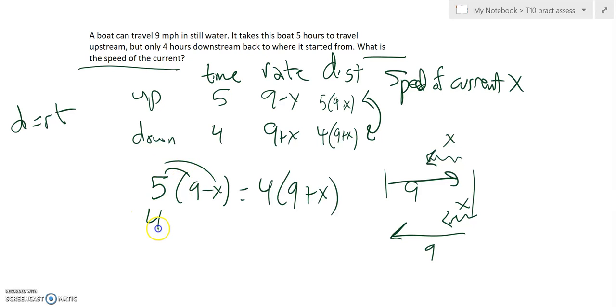You can just solve that, distribute that in. 45 minus 5X equals 36 plus 4X. Add 5X to both sides. Subtract 36 from both sides.